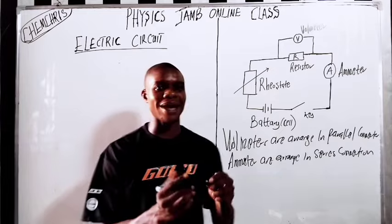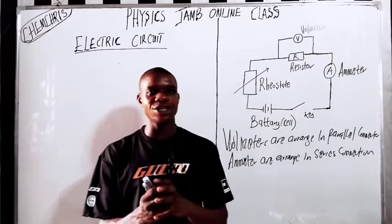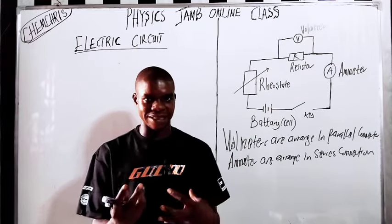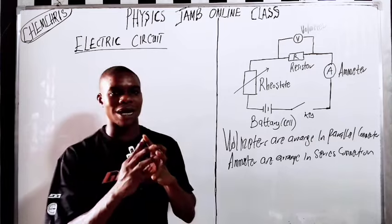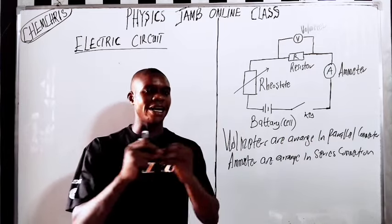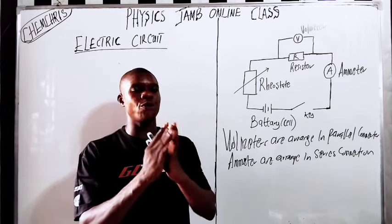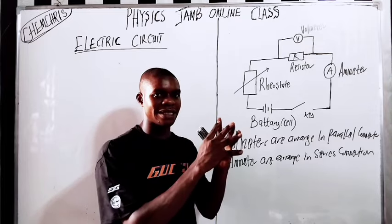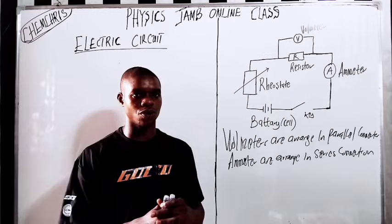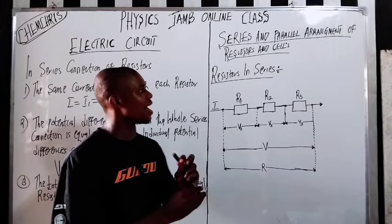Resistors can be arranged both in parallel or in series. We are now going to look at the arrangement of resistors in series connection and the arrangement of resistors in parallel connection, and how we calculate the equivalent resistance for both the series connection and the parallel connection of resistors.